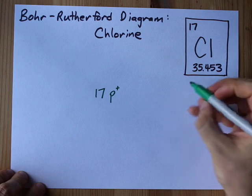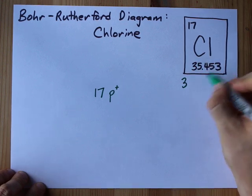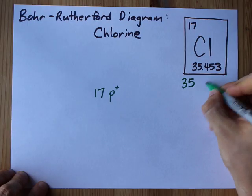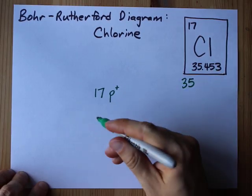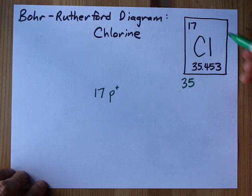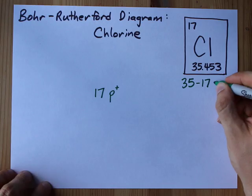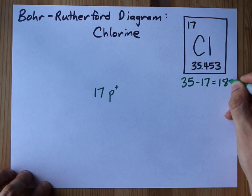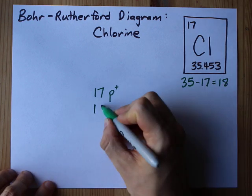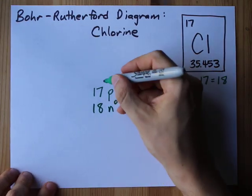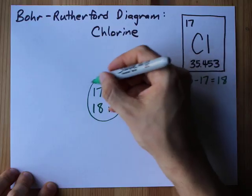The mass number, the rounded version of this number here, for me I'm going to round down to 35. To get the number of neutrons, I take the mass and subtract the number of protons. 35 less 17 gives me 18 neutrons. So I'm going to draw my 18 and my symbol for neutrons here, put a circle around them, and that's my nucleus.